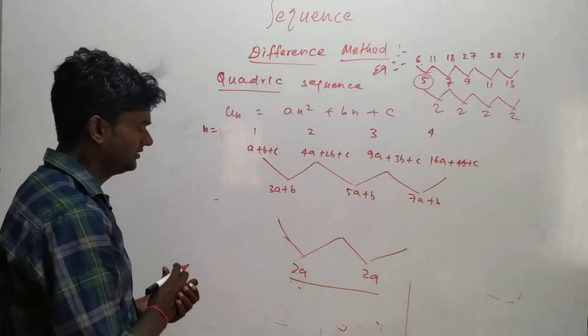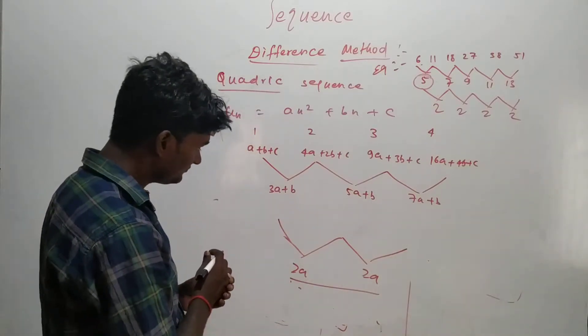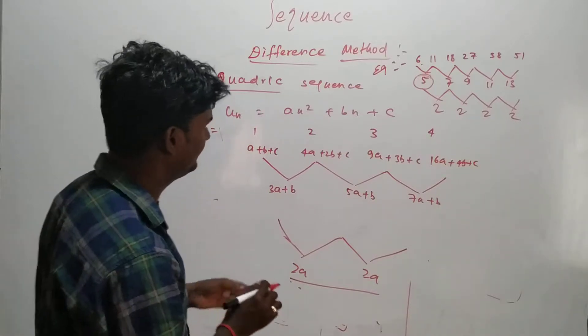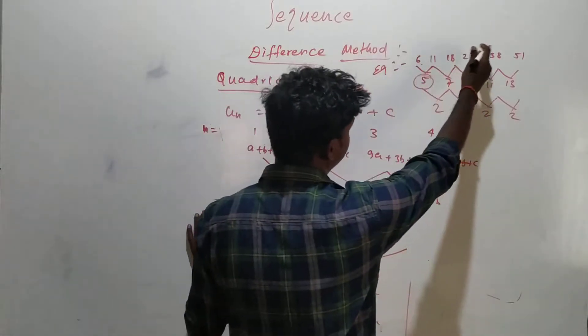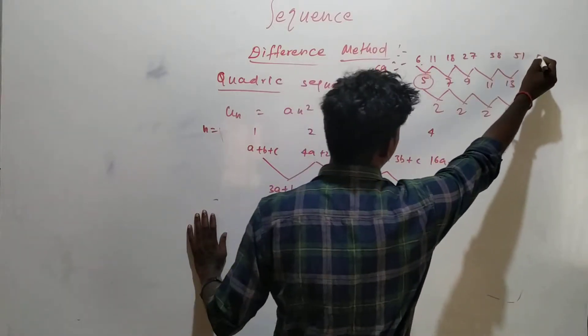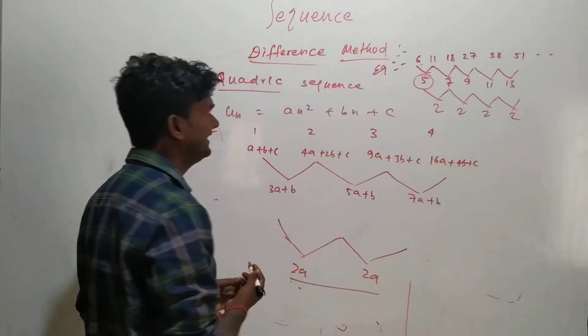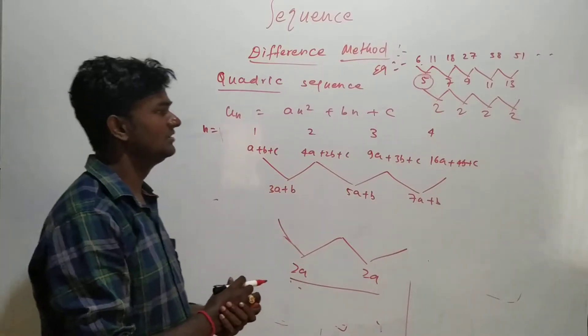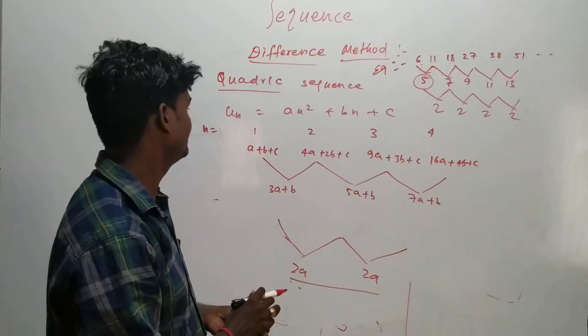So now we have to take examples and I will show you how it exactly works. So I have taken one example: 6, 11, 18, 27, 38 and 51 and so on. We need to find the sequence for a quadratic function.